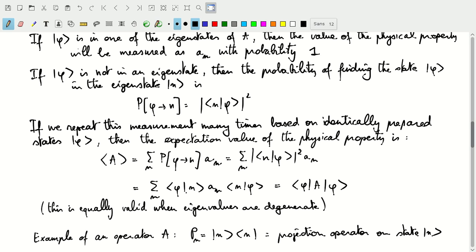we can see that we have here a completeness relation with the sum over n with the ket of n and the bra of n. And so, we can remove that completeness relation to end up with just a matrix element of this matrix A of the operator A between states phi and phi.